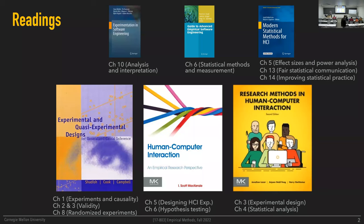The class today, and probably to some extent next time, is based primarily on three books. I've posted digital versions of these chapters in our shared folder, and I strongly encourage you to read those. There's a Shadish, Cook, and Campbell book on experimental and quasi-experimental design — sort of the Bible on research methods. There are also two HCI research methods books with very accessible discussions of experimental designs. We're also starting to go into statistics to some extent, so I've listed a few pointers for additional reading — available in our shared folder, online, or at the library.